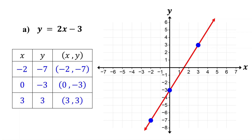Remember, every solution to the equation is a point on this line, and every point on this line is a solution to the equation. You only need two points to graph a line, but it is good practice to use three points. If you plot only two points and one of them is incorrect, you can still draw a line, but it will be the wrong line. If you use three points and one is incorrect, they will not line up, indicating a mistake was made.